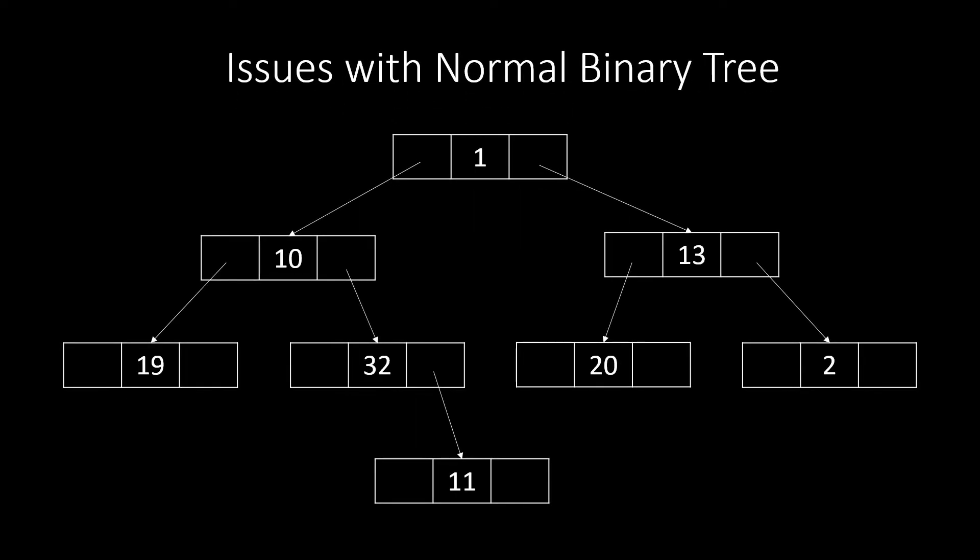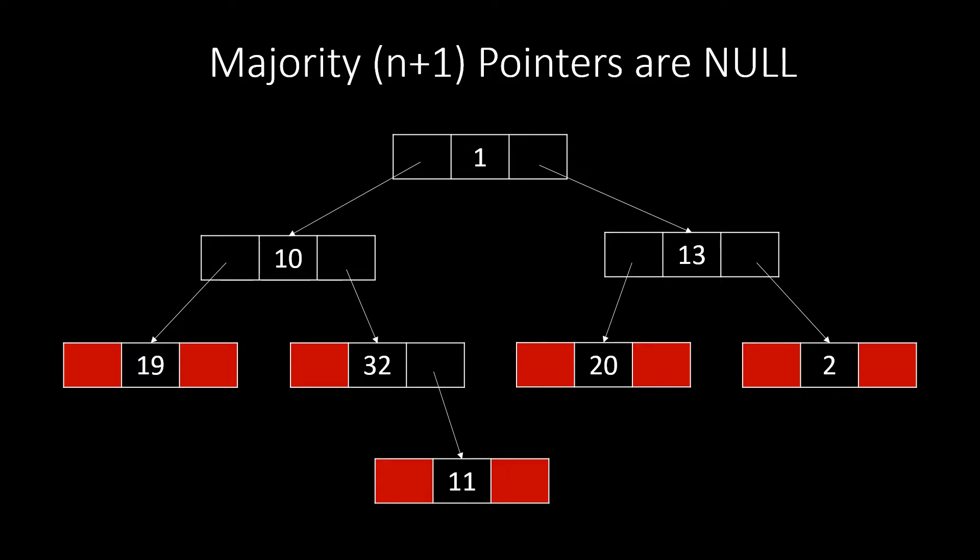Before moving to threaded binary tree, let's see why this came into picture. For that, we need to understand the issues with binary tree. This is a normal binary tree with a node that has a value, a left pointer and a right pointer. Here we see that the marked pointers are null. These pointers get wasted as we do not store any value in it.